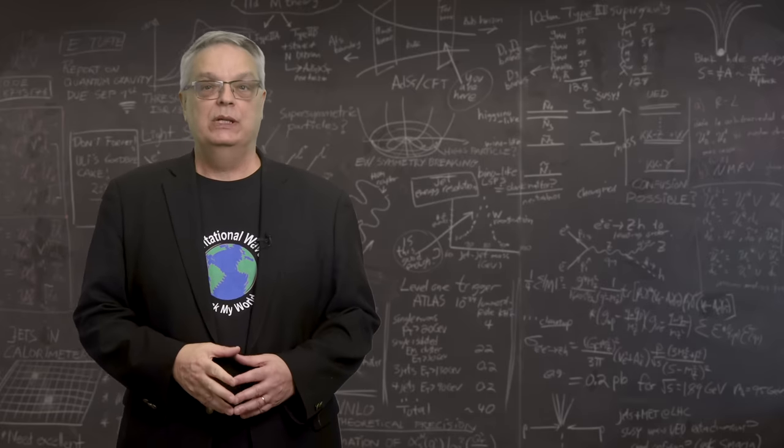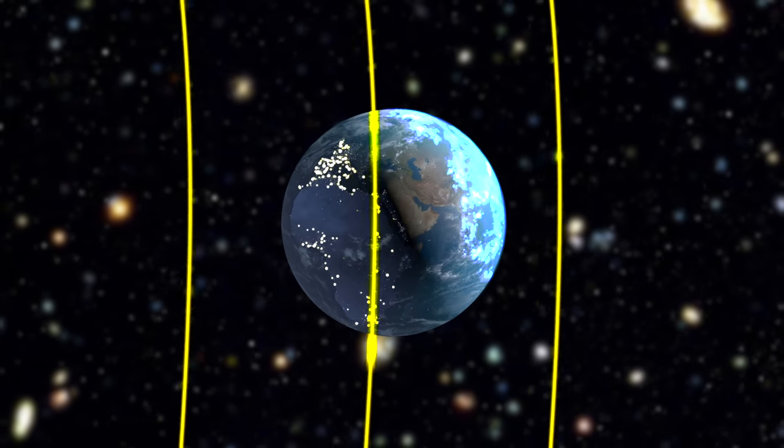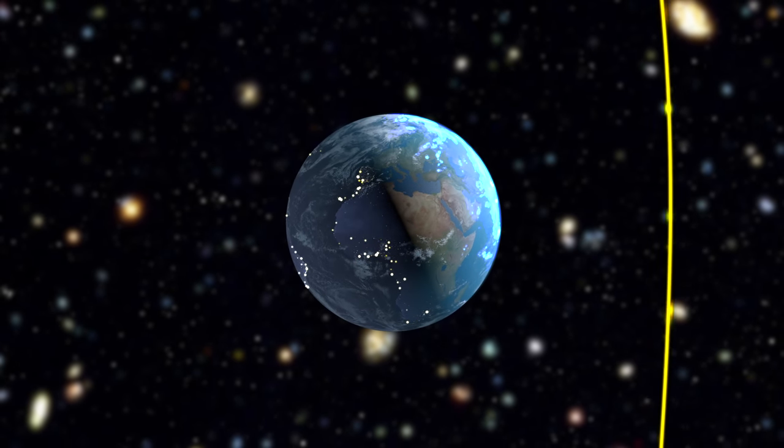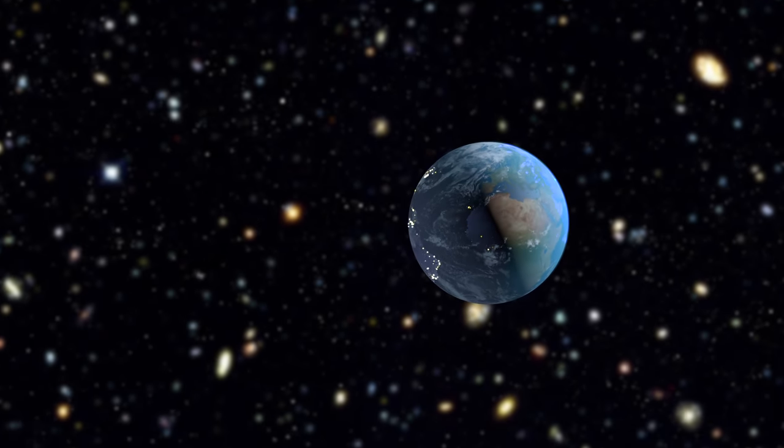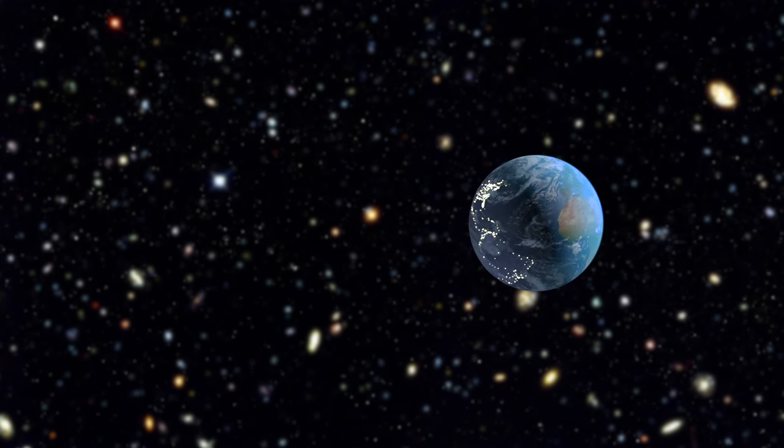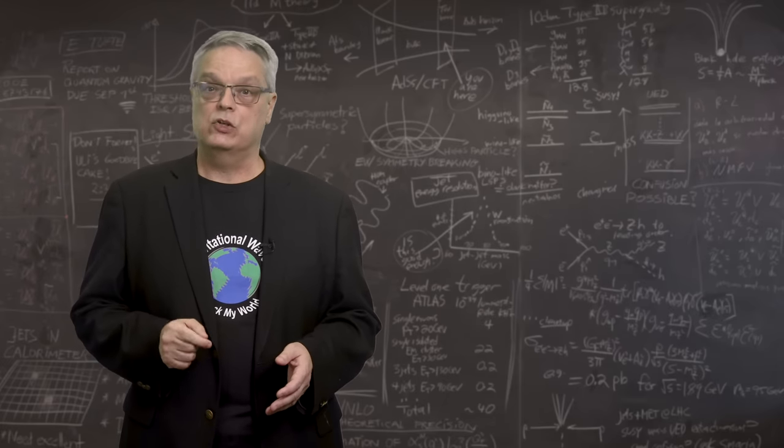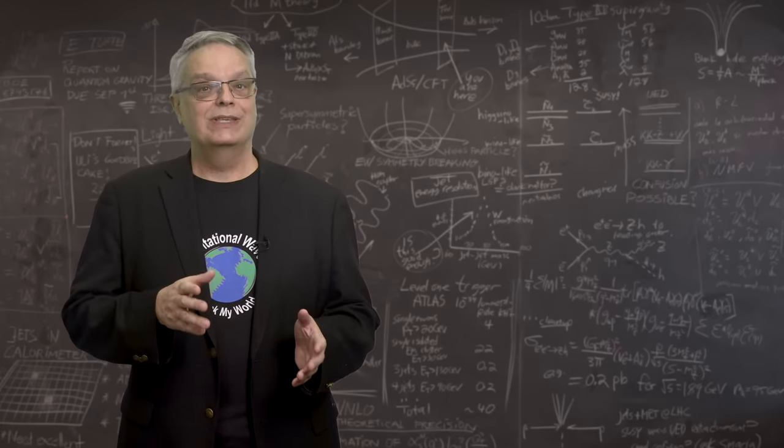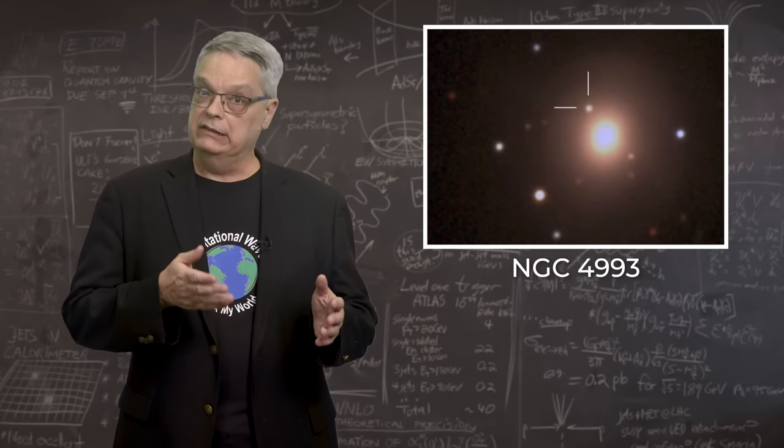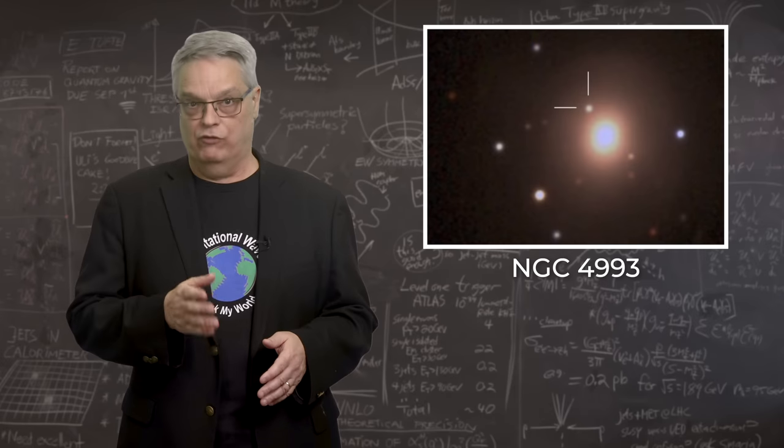And in the fall of 2017, we got lucky. The earth's gravitational wave detectors detected the passage of a gravitational wave. And about two seconds later, orbiting telescopes detected a brief pulse of gamma radiation coming from deep space. After some analysis, both gravitational wave detectors and telescopes agreed that the source was in the same location in the sky, which was eventually nailed down to being an elliptical galaxy in the constellation Hydra, called NGC 4993.